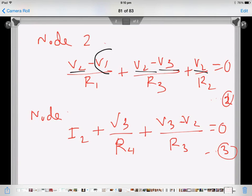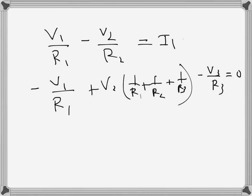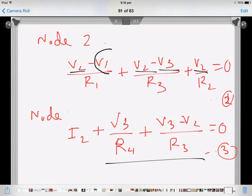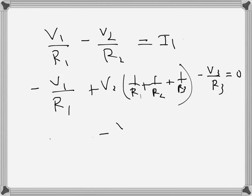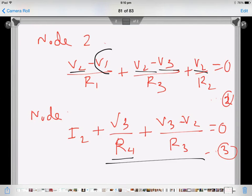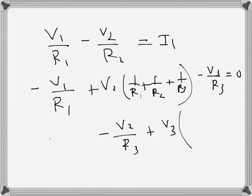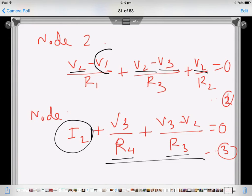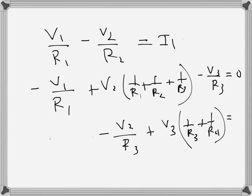The third equation has V1 equal to zero, then negative V2 over R3, and V3 times (1/R3 + 1/R4). The remaining term is moved to the right hand side, giving negative I2. These are the three equations now written so we can express the solutions in determinant form.